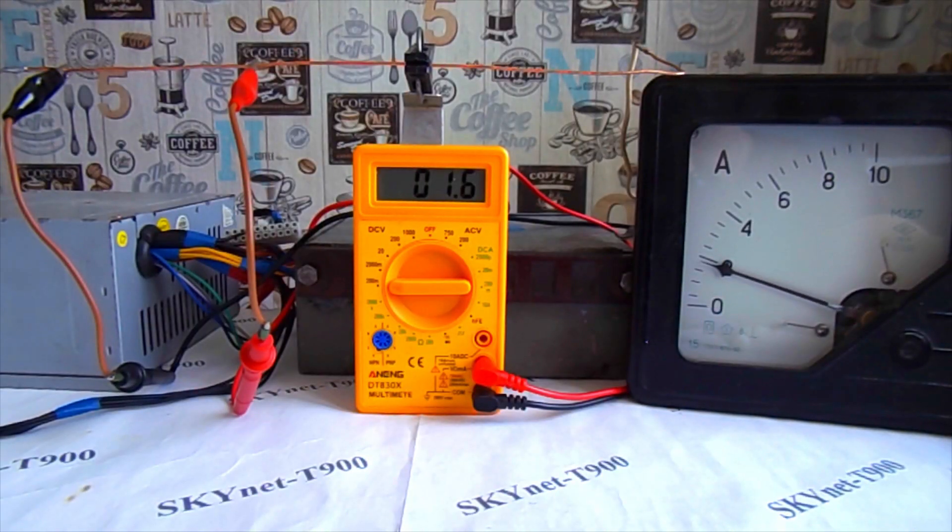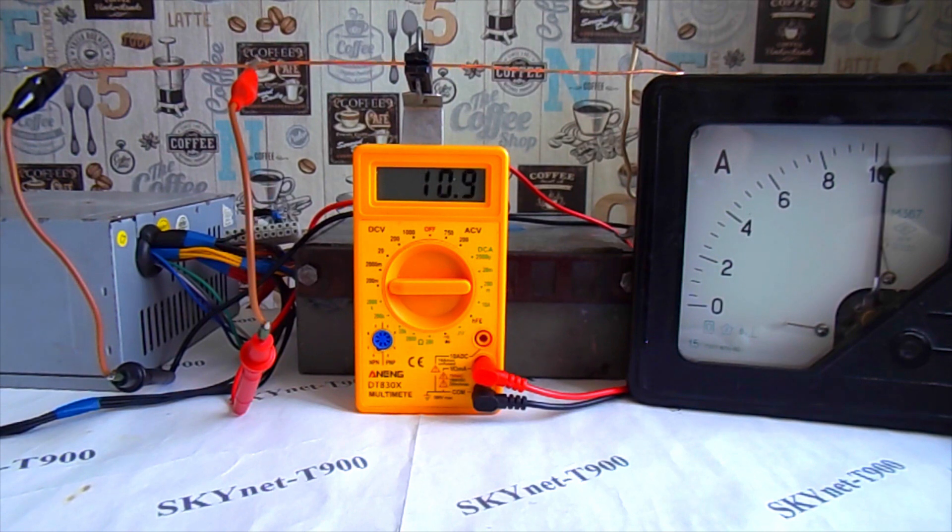Now I will apply the maximum load. The ammeter goes off scale, shows more than 10 amperes. And the voltmeter shows the number 15. This means that now the current in the circuit is 15 amperes. In this way, very large currents can be measured, for example welding machines. But for this, it will be necessary to take a thicker conductor. Fine. We applied this method to direct current.